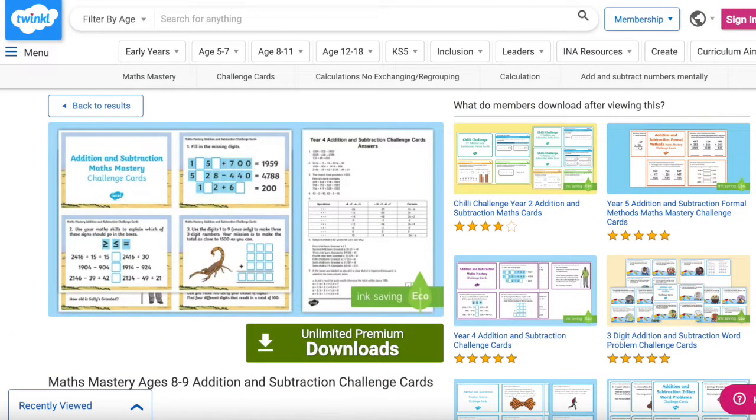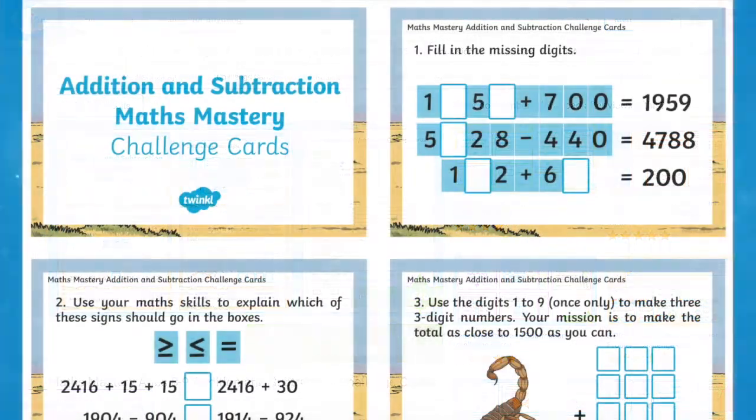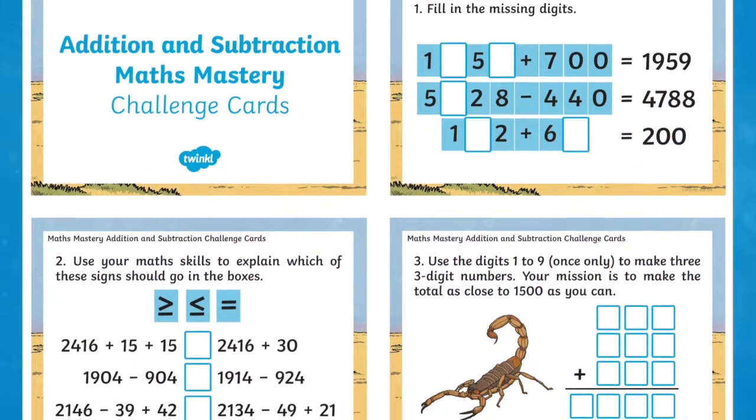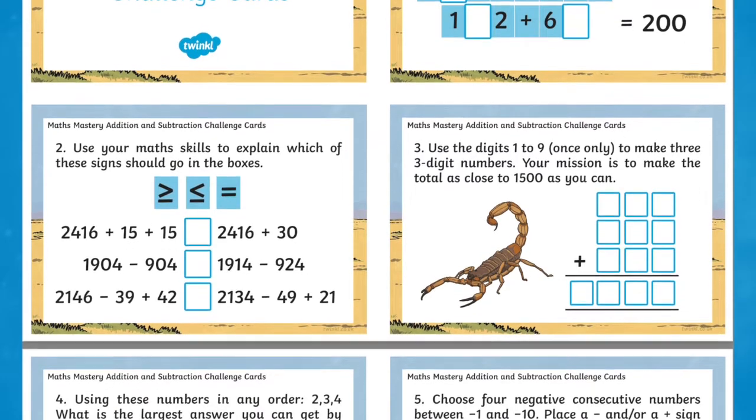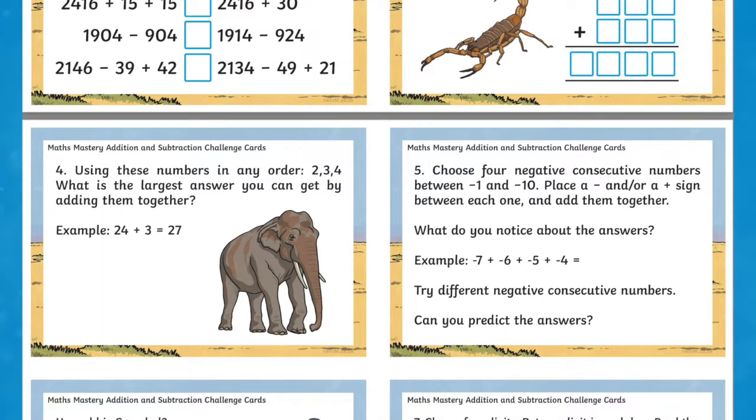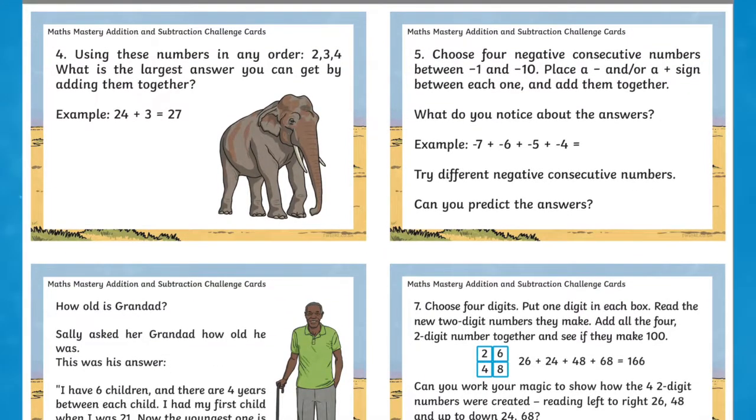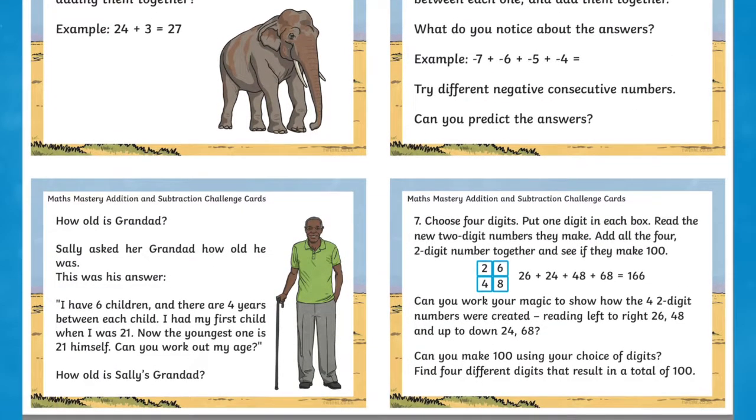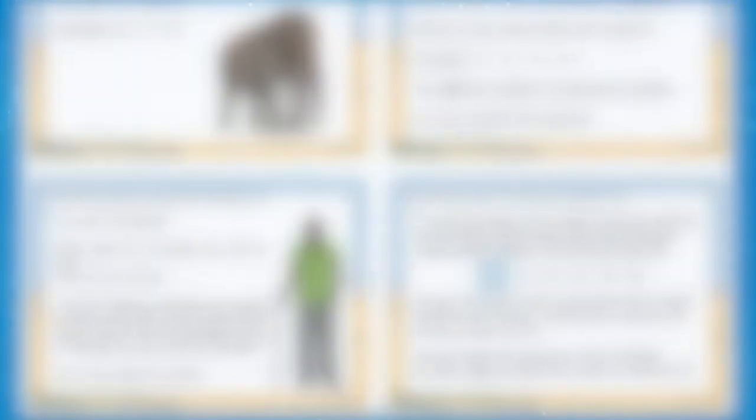A great place to start is the Maths Mastery ages 8-9 addition and subtraction challenge cards. You can use this set of 7 challenge cards to reinforce your teaching of addition and subtraction Maths Mastery, testing your 8 and 9 year old pupils knowledge and finding out where they need any extra support. Perfect for a starter or extension task.